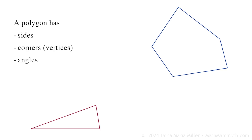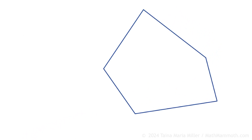Each polygon has several sides, several corners — which we also call vertices — and several angles. You already know a side: this line segment is a side. Corners are these points. This particular polygon has five corners, also called vertices. One point is one vertex, and in plural, if there are many, we call them vertices.